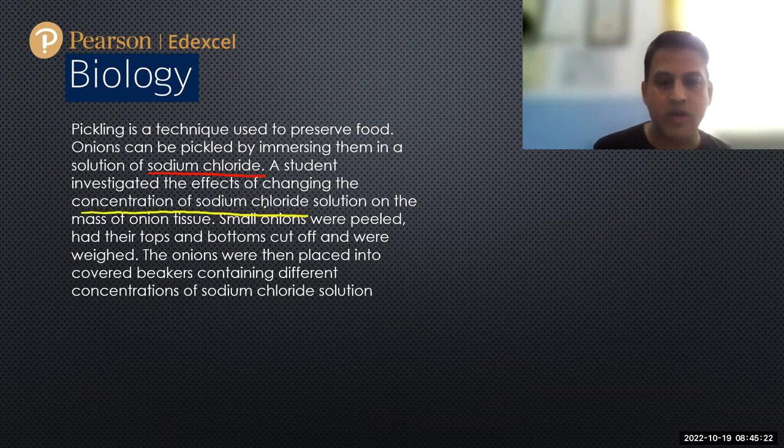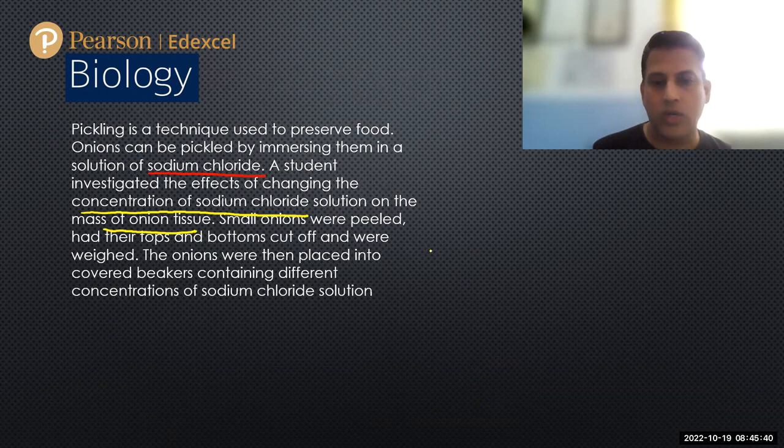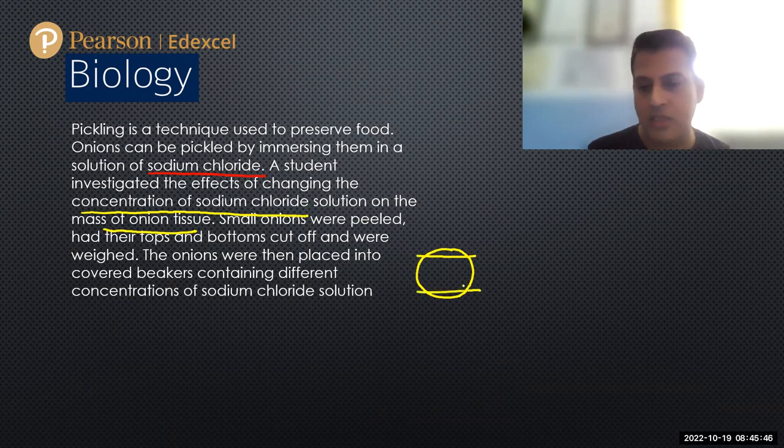In this investigation, the student changed the concentration of sodium chloride on the mass of onion tissues. Small onions were peeled, their tops and bottoms cut off and weighed. Onions were then placed into covered beakers containing different concentrations of sodium chloride solution. If onion is like this, it's peeled, this part and this part is cut, and placed in a beaker containing sodium chloride which is covered.